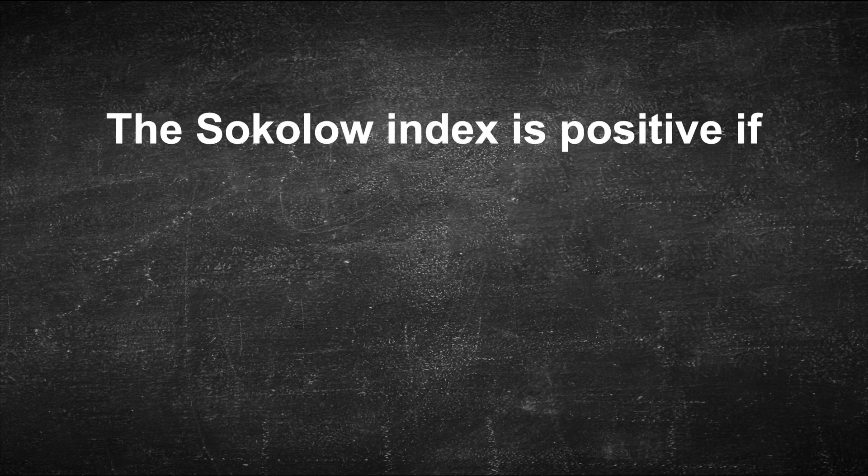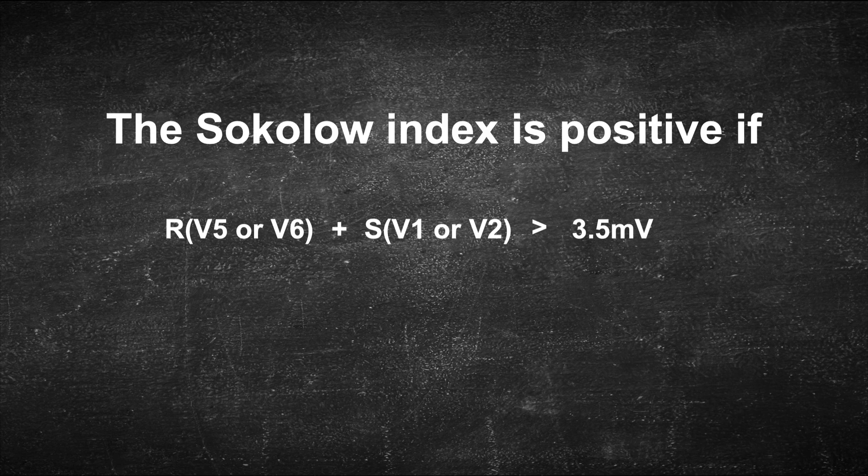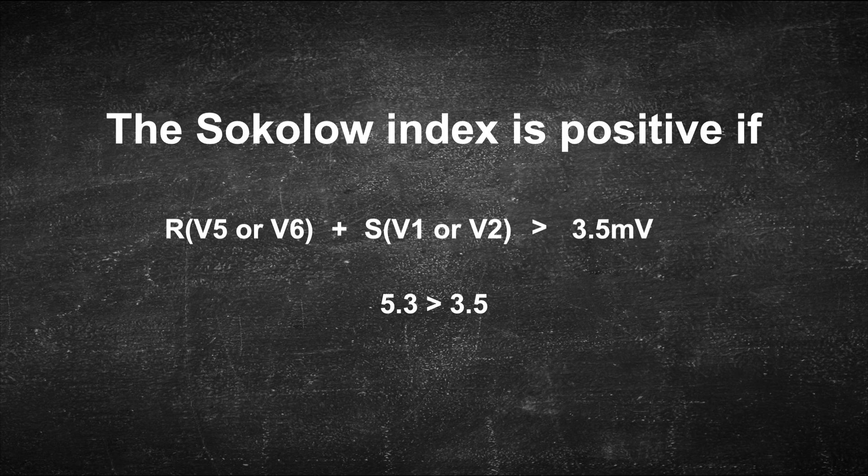The Sokolov index is positive if the R in V5 or V6, whichever one is taller, plus the S in V1 or V2, whichever one is deeper, is bigger or larger than 3.5 millivolts. In our example, we arrived at a number of 5.3, and that's clearly above 3.5, so left ventricular hypertrophy is most likely present.